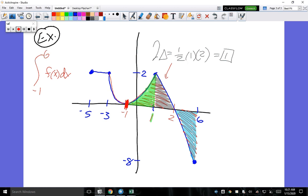All right. So let's do the third one. The third area is 1 half times the base of 4 times the height of 8. So what's the answer? Negative 16. Because it's below the x-axis.